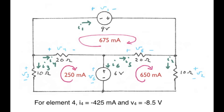For element 4, using I sub N equals IX minus IY yields I4 equals 250 milliamps minus 675 milliamps, or minus 425 milliamps. Then using Ohm's law V equals IR, V sub 4 is minus 8.5 volts. The power I times V is 3.6125 watts with the positive sign, meaning the resistor is absorbing 3.6125 watts from the rest of the circuit.